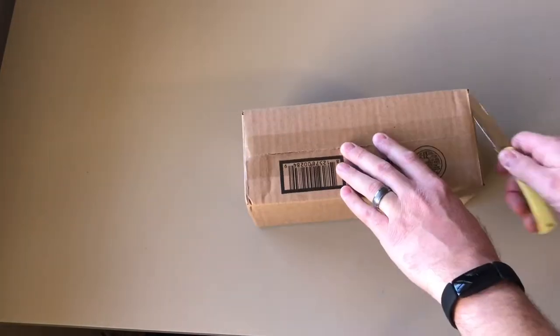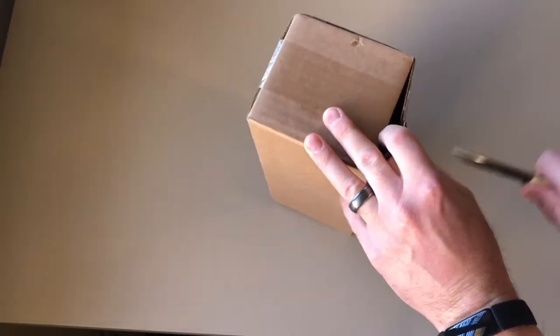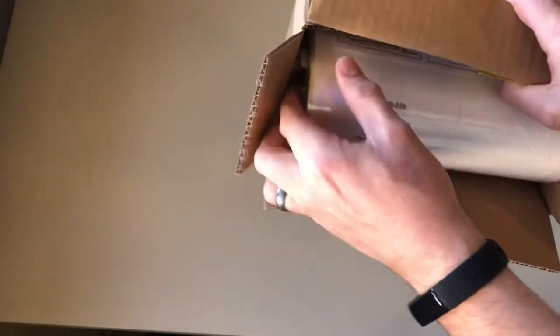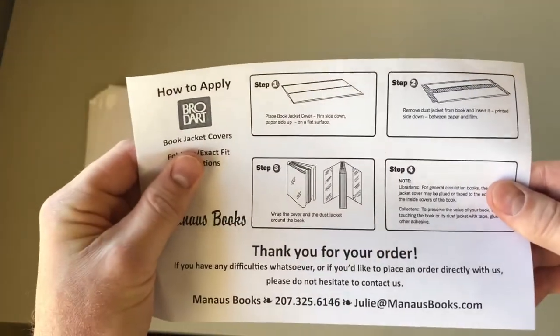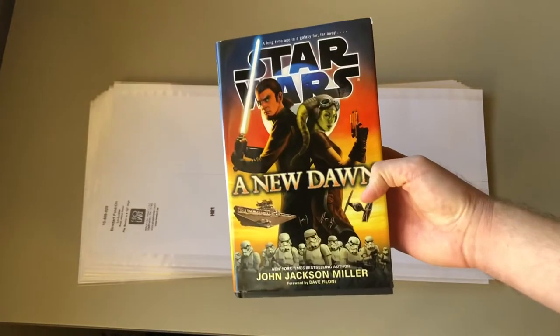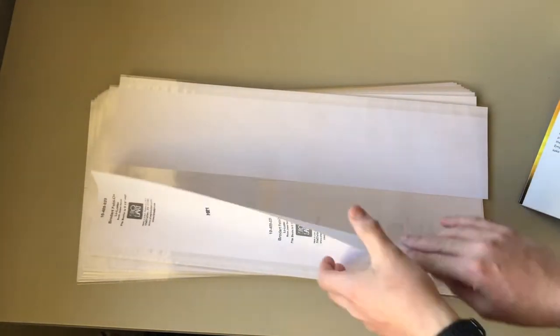So first things first. Open up the package with the fancy case knife. Made in the USA. I love case knives. But here we are with the Bodart dust jacket covers. It's like a transparent plastic. These are the four easy steps on how to do it. We're gonna start off with A New Dawn by John Jackson Miller. The first book released in the Disney canon.